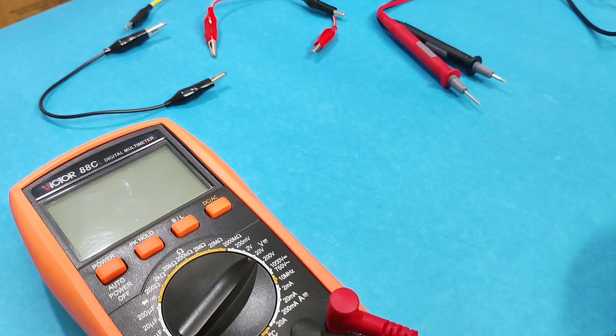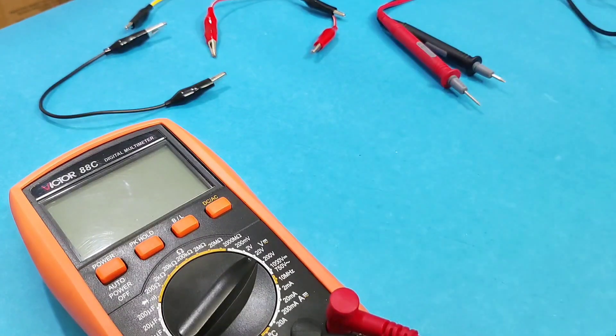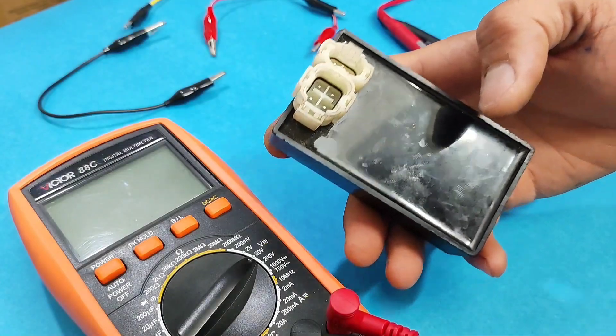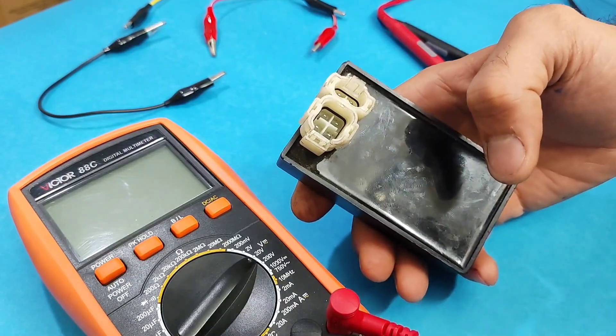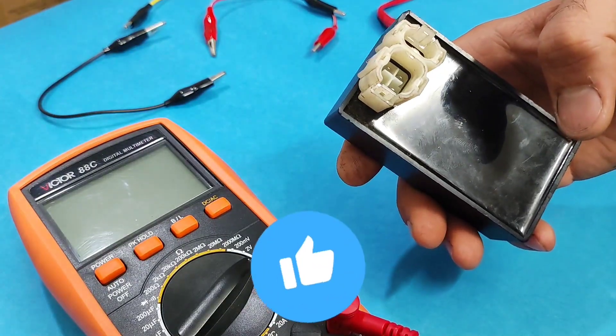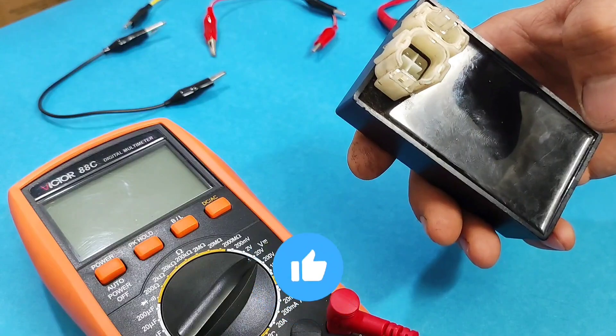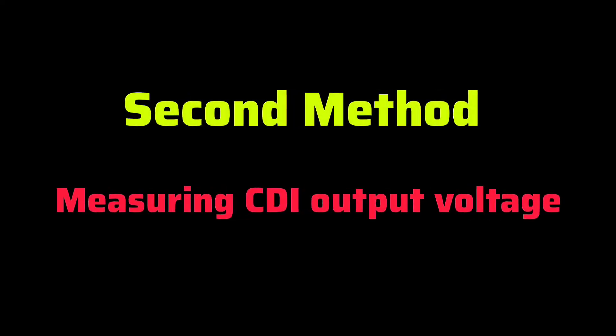So that was the first method which could be done using a multimeter. The second method is more accurate. Thank you for staying with me up to this point. If you found this video helpful, give it a like and leave your comment.